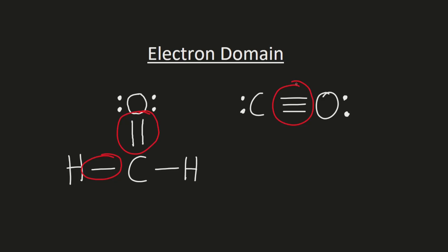A lone pair is also an electron domain, and it is a pair of valence electrons that are not involved in covalent bonding. These are the pairs of dots that are shown on a Lewis structure.